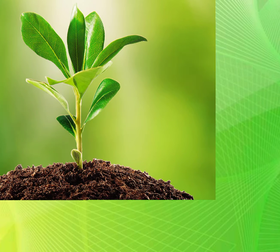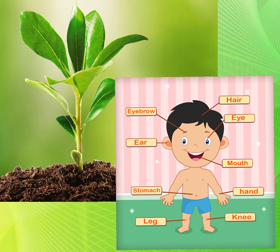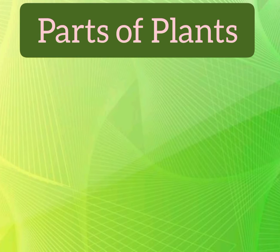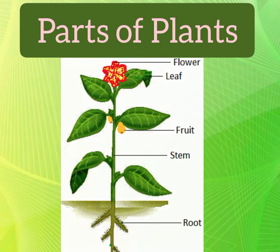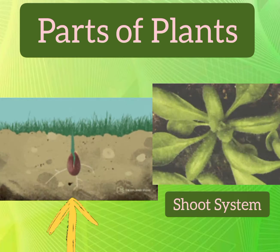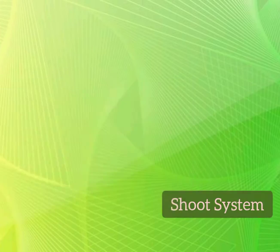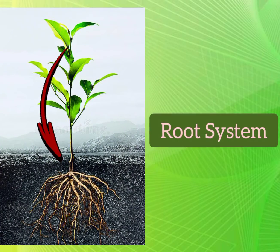Plants are very similar to humans and just like humans have different body parts, similarly plants too have different parts. The parts of a plant that are above the soil form the shoot system, and the plant part inside the soil forms the root system.